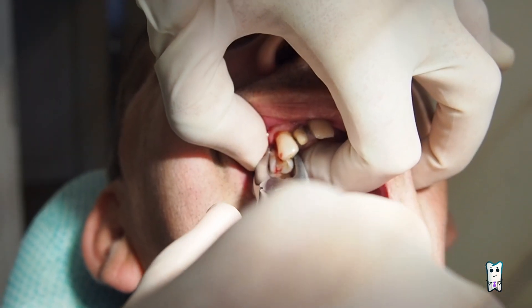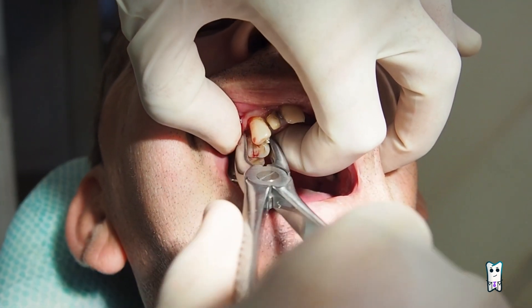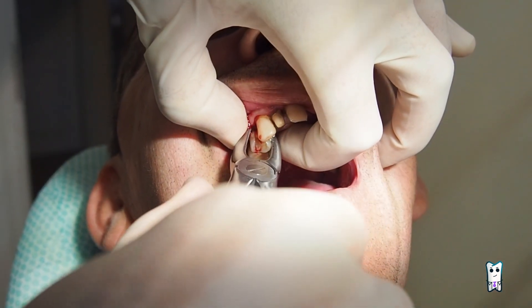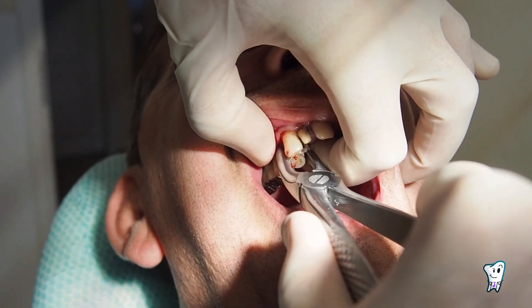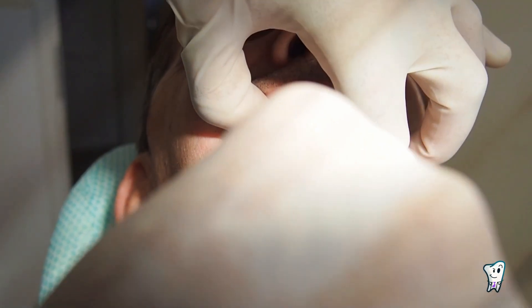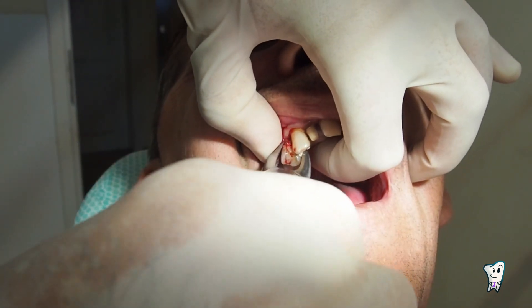This sequential approach of palatal and vestibular luxations will allow for a controlled expansion of the alveolus. The aim is to expand the socket gradually, minimizing the trauma to the surrounding structures.